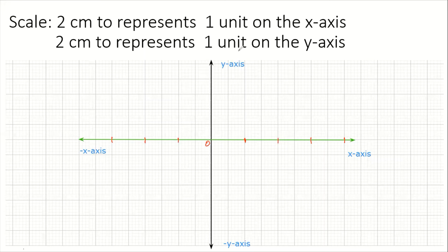Since the unit is one, we are counting by one, so for every two centimeters we go up by one unit. From the origin: one, two, three, four. On the negative side: negative one, negative two, negative three.